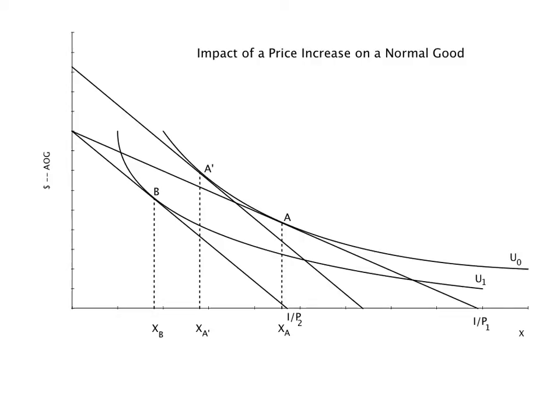If price increases from P1 to P2, the budget line pivots in and the consumer moves from bundle A to bundle B.